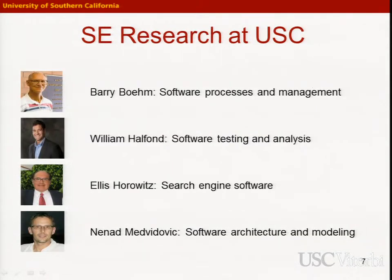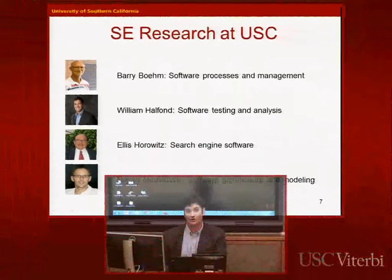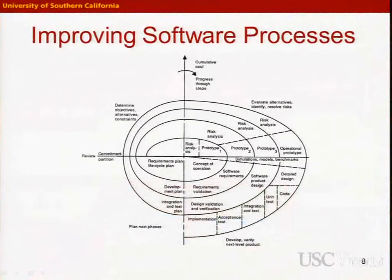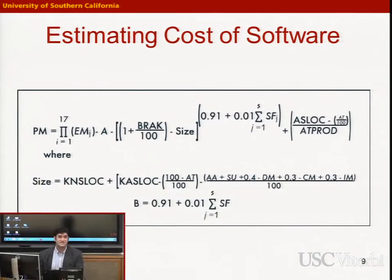We also have extensive research going on here at USC. There are four faculty whose research overlaps with software engineering: Barry Bain, myself, Ellis Horowitz, and Ninan Medvedevich. Professor Bain's research focuses on improving the software process — specifically the incremental commit spiral model — finding more efficient ways to develop software and manage its different phases so that projects are more likely to succeed and stay within budget. He has also developed the COCOMO technique, which enables software managers to predict using mathematical functions how much their software will cost and how long it will take to develop.